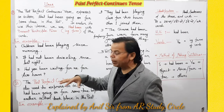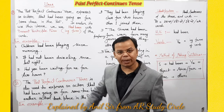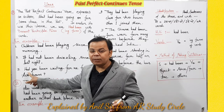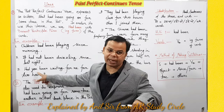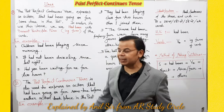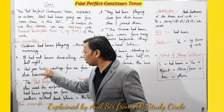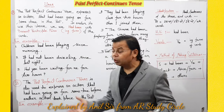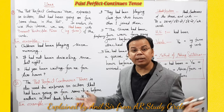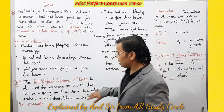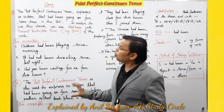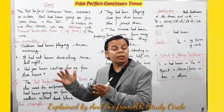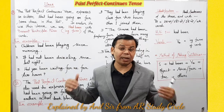For interrogative negative sentences: first 'had', then subject, then 'not', then 'been' — for example: 'Had you not been waiting for me for two hours?' — Kya aap do ghante se mera intezaar nahi kar rahe the? So the first use is: to express an action that was going on from a particular time in the past.